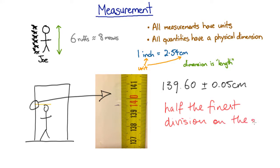In general for measurements using an analog scale such as a ruler, a dial or a clock, the uncertainty in the reading is half the smallest division of the scale. But the uncertainty in your reading or recording device is not the only way your measurement might be different from the best or true value, and we'll talk about different types of error next.